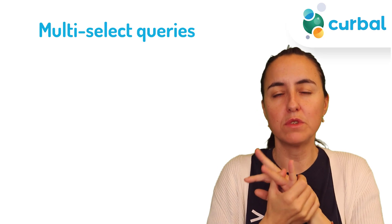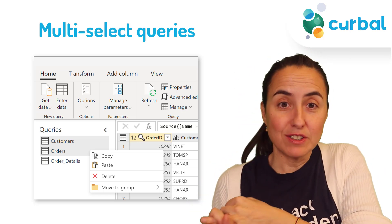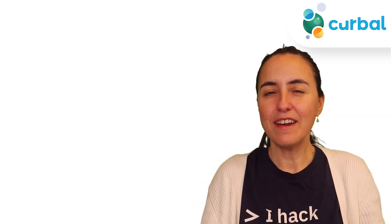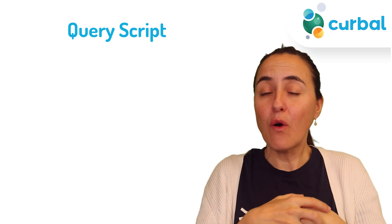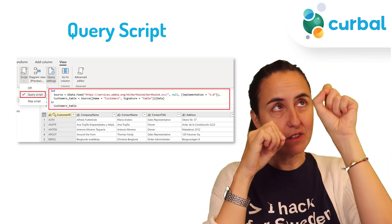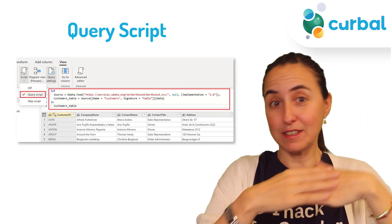You have been able to do this in Power Query for a long time, but now in Dataflows you can multi-select queries in the query pane — control-click and shift-click, the same way as in Power Query Desktop. Also, they have created a query script feature. In the formula bar, you can only see the code for the current step. Now with a button on the ribbon, you can switch from step script to query script, so you can see the entire query or just the current step. I love these usability improvements.